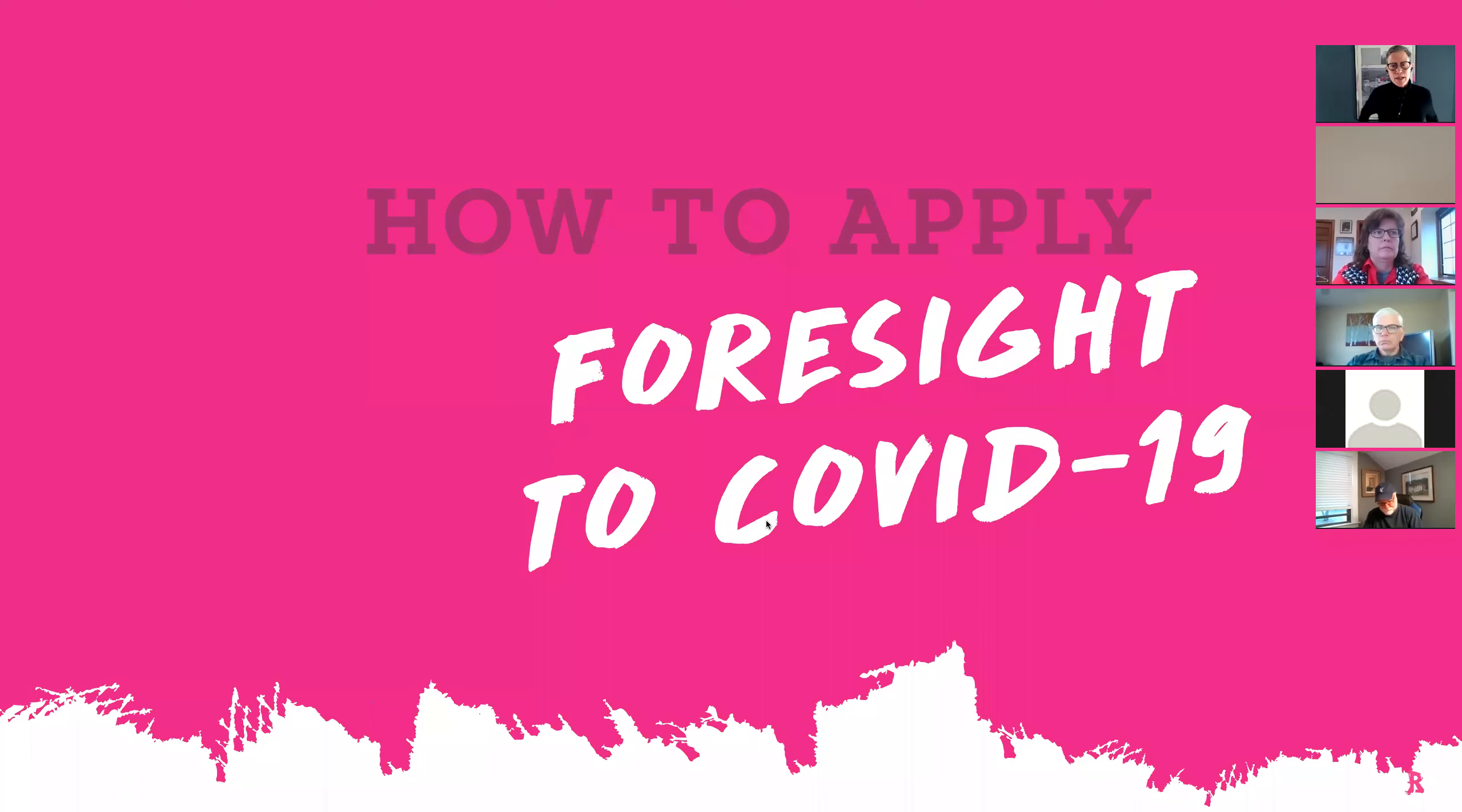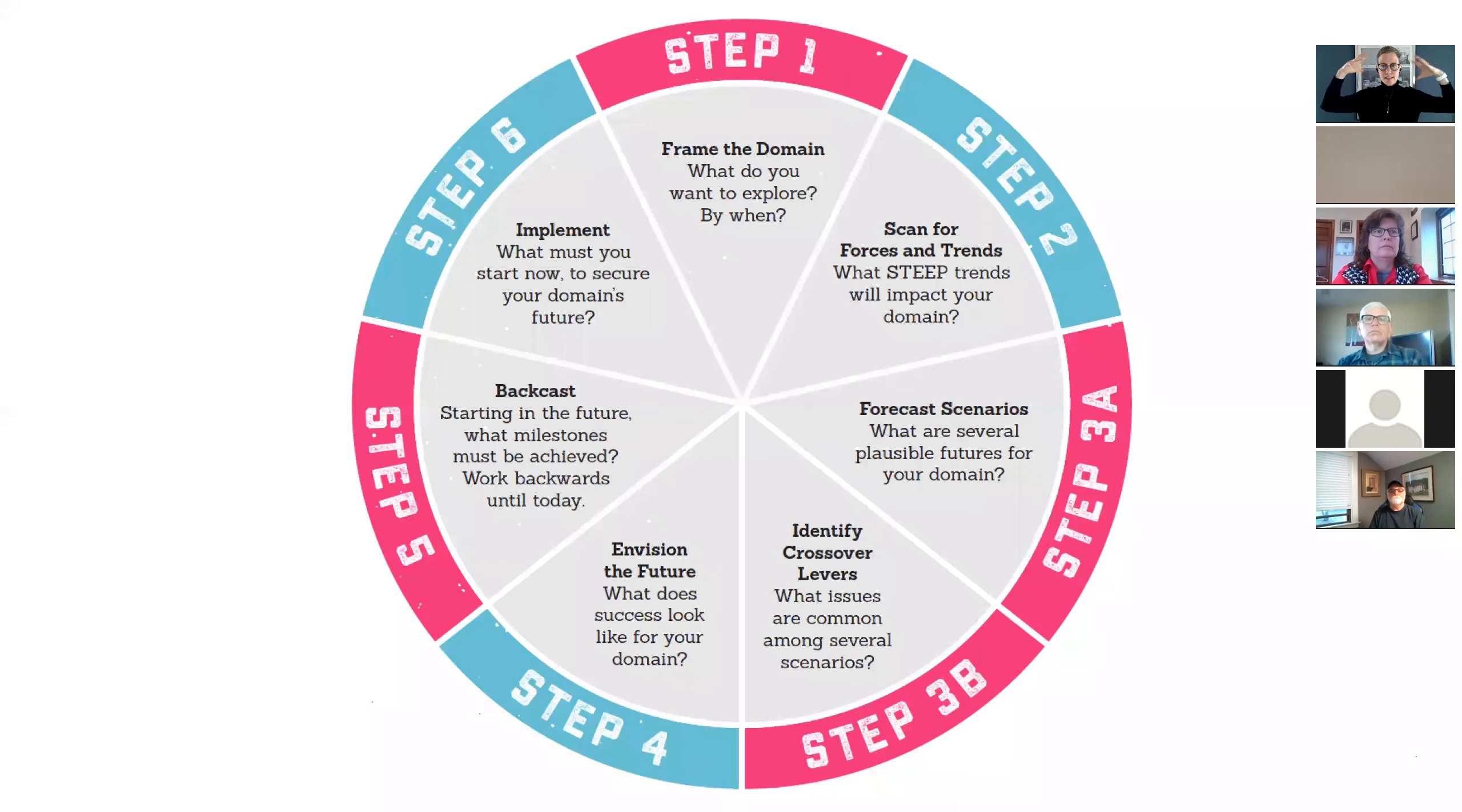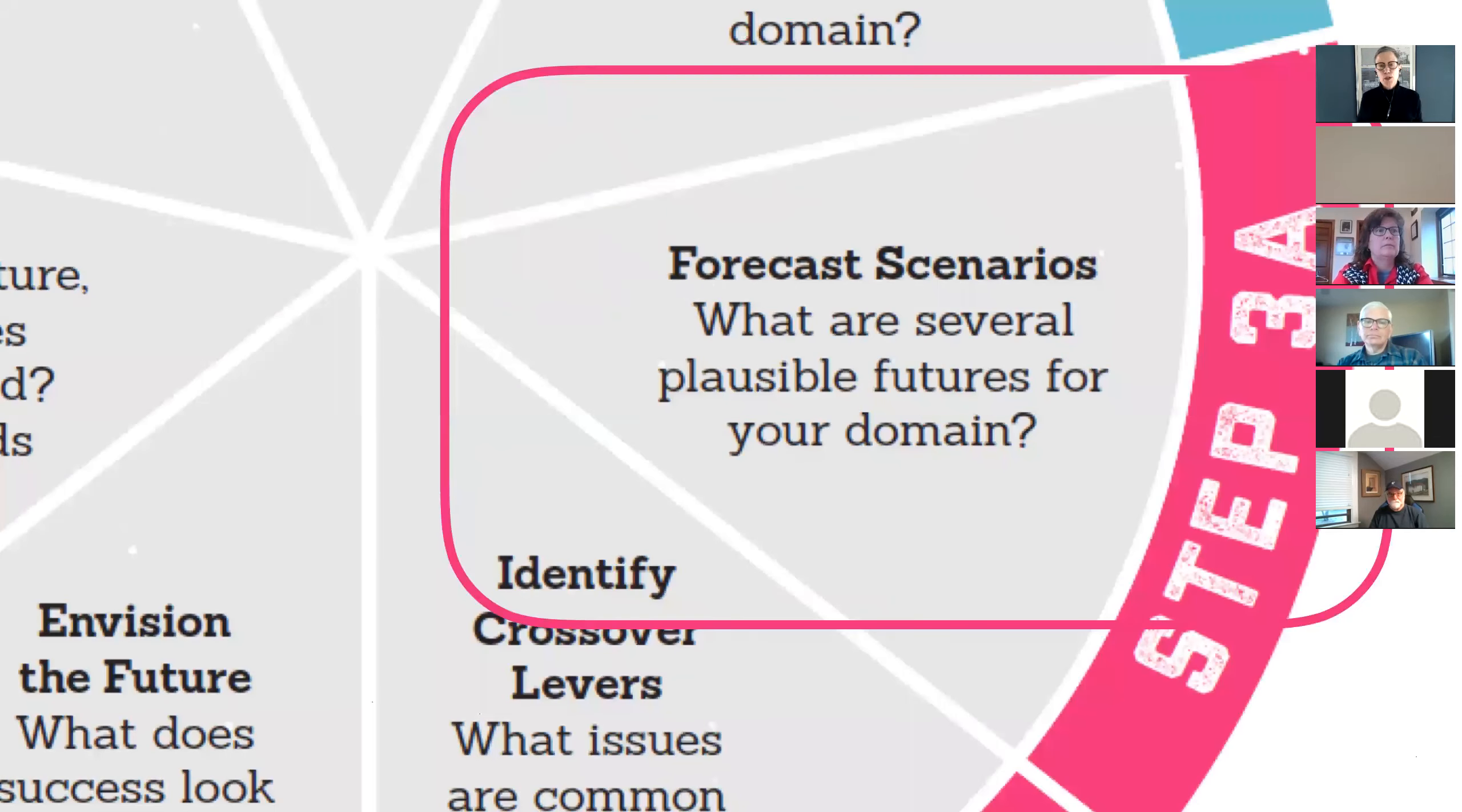So I want to share with you some ideas for how we can apply foresight to COVID-19. This is the six step foresight process. If everything was great, we would start at step one and proceed merrily around the framework. But this is an unusual time, we're jumping right to forecasting scenarios, which is step 3a. And we are going to be talking today about plausible scenarios. I invite you to think about how you can apply these questions and these tools to your domain.